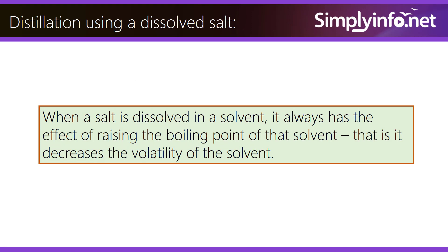Distillation using a dissolved salt is another method. When a salt is dissolved in a solvent, it raises the boiling point of that solvent, decreasing its volatility.